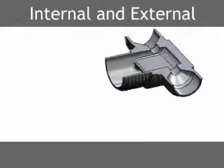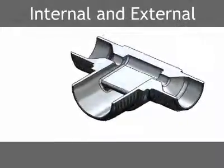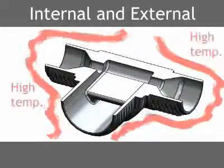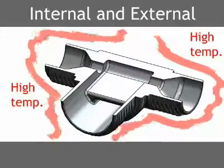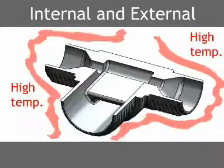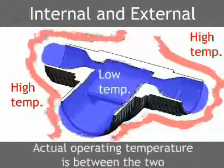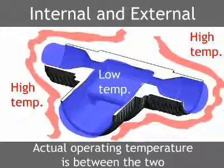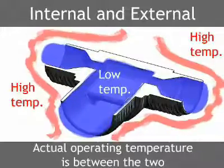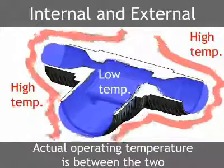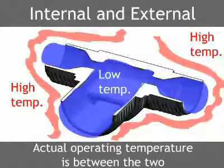Steady state external temperatures may only partially indicate the true operating temperature of a component. For example, automotive fuel pumps are located under the hoods of vehicles, where the operating temperature frequently reaches 220 degrees Fahrenheit. The pump is also exposed to flowing fuel on the inside, which is at a much lower temperature. The actual operating temperature of the pump is between the two, and is substantially lower than the under hood air temperature.